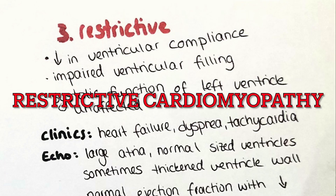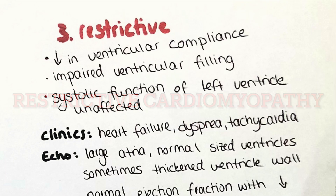The last type of cardiomyopathy is the restrictive type. It presents with a decrease of the ventricular elasticity in diastole but an unimpaired systolic function of the left ventricle. This leads to impaired ventricular filling, and patients will present with heart failure, dyspnea, peripheral edema, and tachycardia.